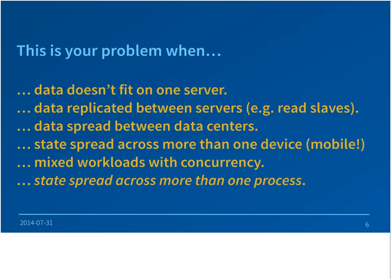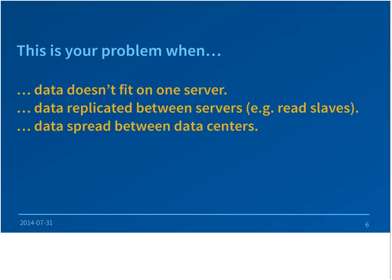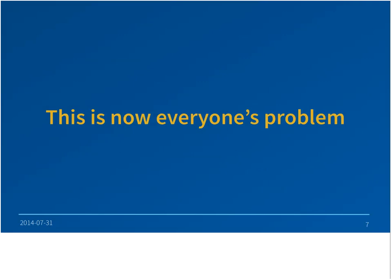Consistency in a distributed system is really your problem when your data doesn't fit on a single box, when you want to replicate state for availability or decreased read latency across servers, or when you have to spread data between different data centers for disaster recovery. The minute you spread the state of your application across more than one device — and this is particularly a thing with mobile now — this becomes much more challenging. But even on a single machine, consistency is still a hard problem, due to concurrency when multiple people interact with the database at one time. My humble opinion is that this is now everyone's problem.